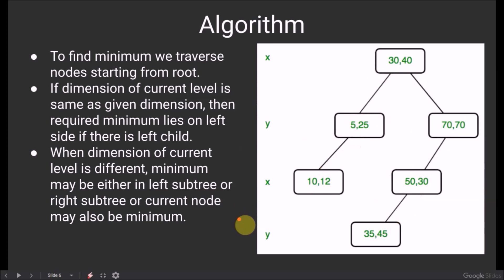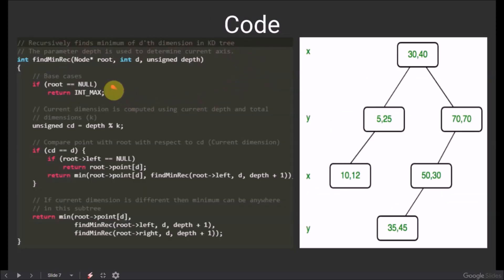Now let us have a look at the code. In the function, we have passed the root node, integer d, which signifies the dimension in which we have to find the minimum, and the current depth. The base case is when root is equals to null, that is when the tree doesn't exist. Then the minimum would not be defined, and we can return integer max.